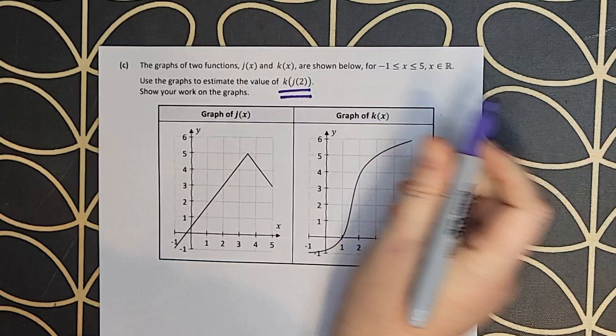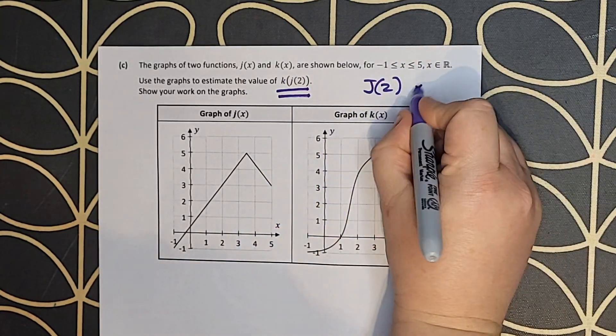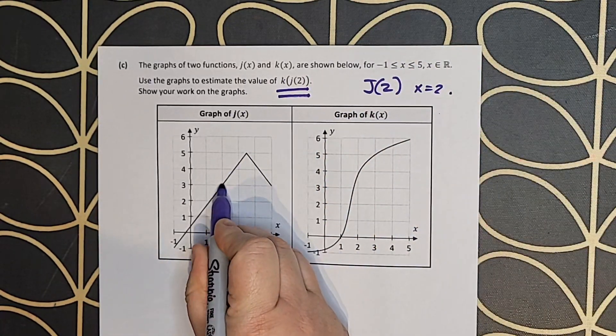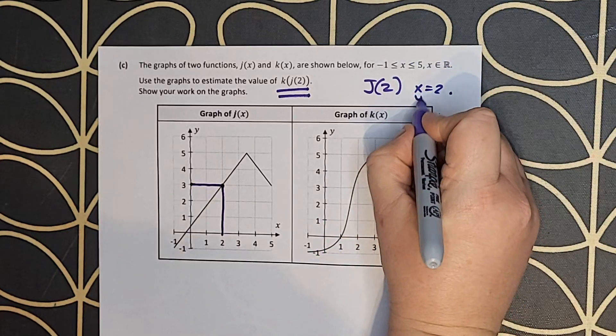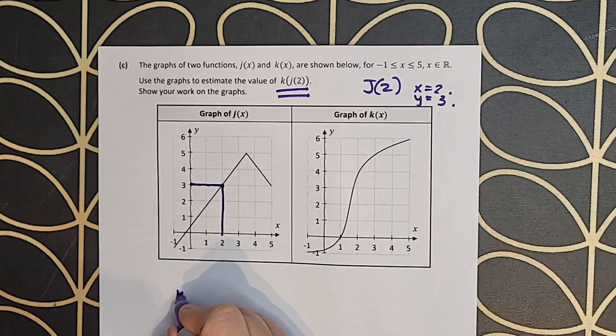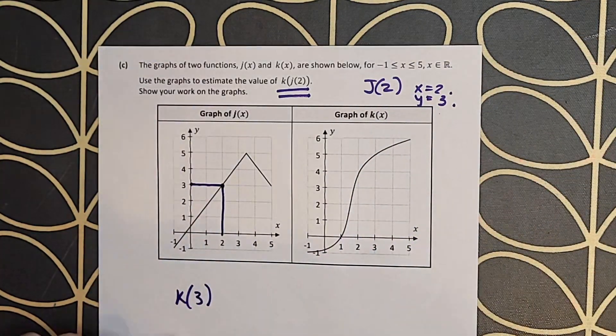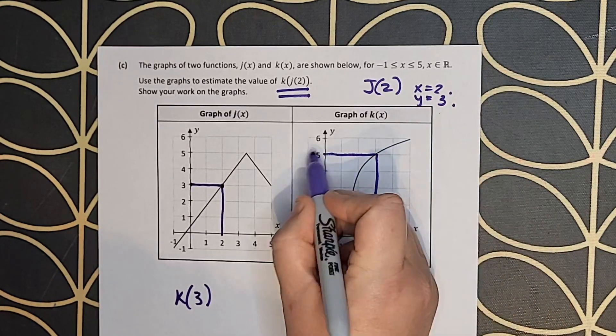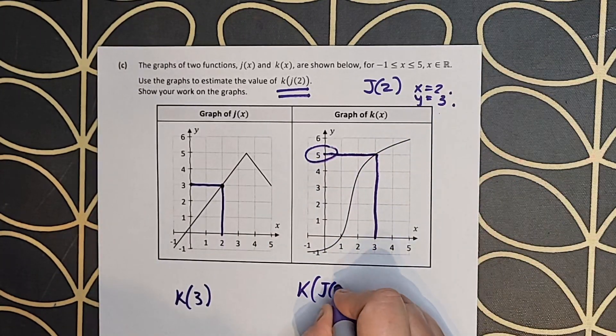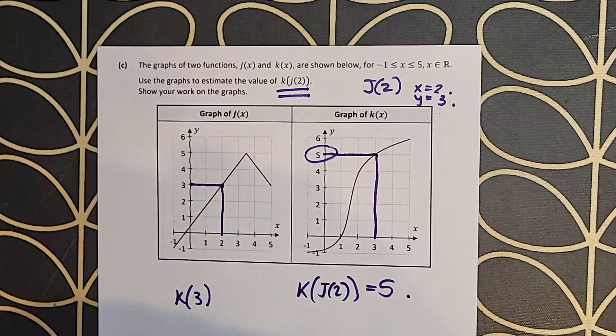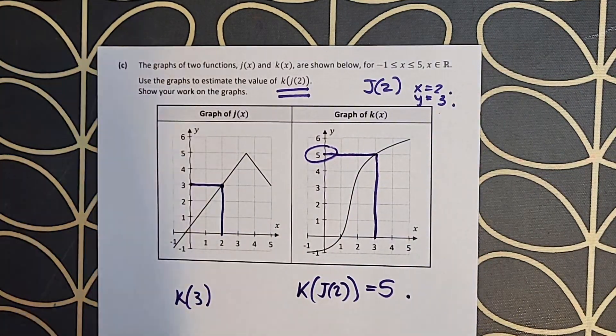And part c. This is another composite function, but we're actually using our graphs here. They're looking for k(j(2)). So the first job is to find what the value of j of 2 is using its graph, and I find that it's 3. So now I'm looking for k of 3. I use the graph of k to find it and I end up getting an answer of 5.